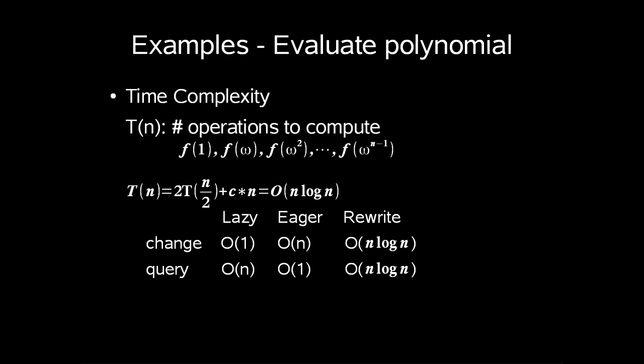So now we want to answer how many number of operations does it take to compute f(1), f(omega), f(omega squared) up to f(omega to the n-1). t of n is then equal to 2t of n half plus c times n where c is some constant work that is calculated from the number of arithmetic operations. We don't write big O notation when we have recursive functions. So this will give us O of n log n. This technique is the exact use for fast Fourier transformations.